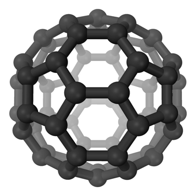Propionitrile, also known as ethylcyanide and propanitrile, is an organic compound with the formula CH3CH2CN. It is a simple aliphatic nitrile. The compound is a colorless, water-soluble liquid. It is used as a solvent and a precursor to other organic compounds.